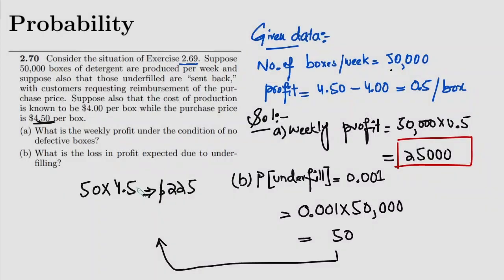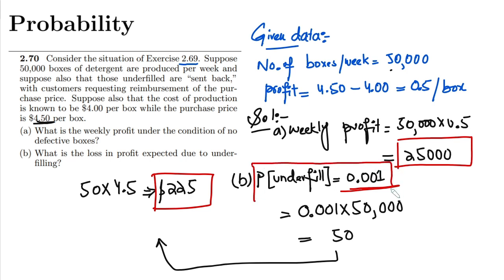That is basically the loss which we will have if we find any underfilled items with the probability given in this scenario. So that is the solution of